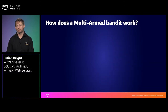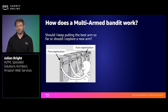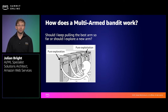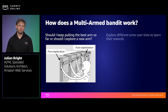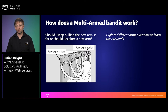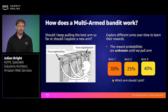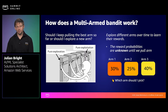So how does a multi-armed bandit work? The multi-armed bandit problem is best understood through an analogy. A gambler at a row of slot machines with N arms needs to decide which arm to pull and in which order. When pulled, each arm provides a reward from a distribution specific to that machine. The objective is to maximize the total reward collected, and you do this by exploring which arm is more effective over time to learn the reward distribution. For example, arm one may provide a 30% success rate, but if you don't explore arm three, you wouldn't have found out that it would provide a higher 40% success rate.